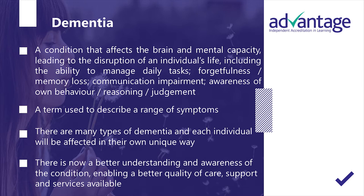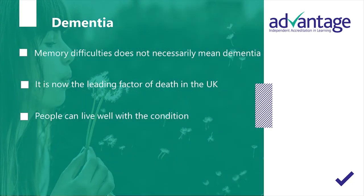There is now a better understanding and awareness of the condition, enabling a better quality of care, support and services available. There are some things that it is important to remember. Memory difficulties do not necessarily mean dementia. Dementia is now the leading factor of death in the UK, but people can live well with the condition.